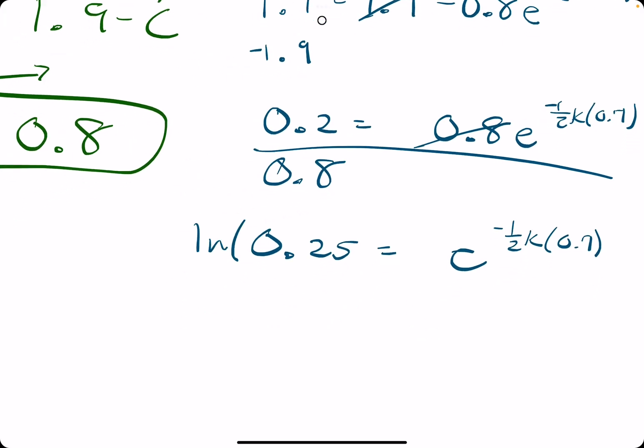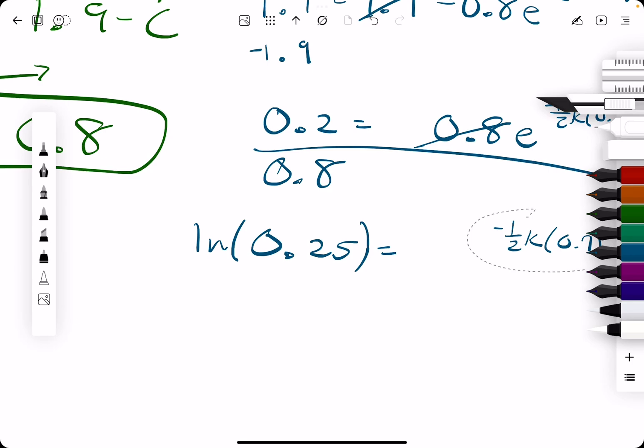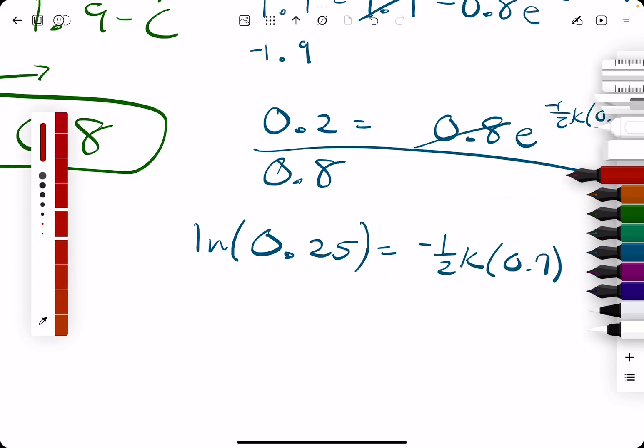And then, we take the natural log on both sides, eliminating the e. And then, to isolate k, we want to divide by 0.7 and divide by negative one-half. But, dividing by negative one-half is the same as multiplying by negative two.